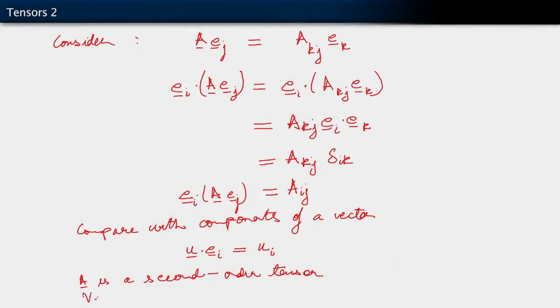So, A is a second order tensor. Vectors are first order tensors. Therefore, what about scalars? What kind of tensors are scalars? Are they tensors at all? Obvious, right? Scalars are zero order tensors. Generalizing that idea. We will stop here for this segment.